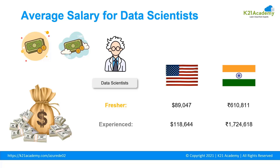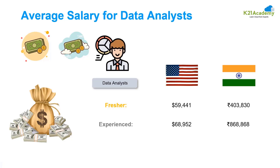What is the average salary of a data scientist and data analyst? For a data scientist, a fresher in the US earns $89,047 and in India ₹6,10,811. An experienced professional earns $1,18,644 in the US and ₹17,24,618 in India. For a data analyst, a fresher earns $59,441 in the US and ₹4,03,830 in India, while an experienced professional earns $68,952 in the US and ₹8,68,868 in India.